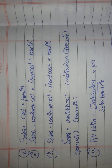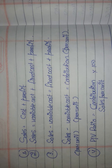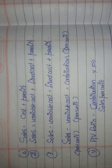If you have seen my previous videos, you know the difference between fixed and variable cost. Fixed cost is the cost which remains fixed throughout and does not change with the change in production. Variable cost is the cost which varies or changes with the change in production.